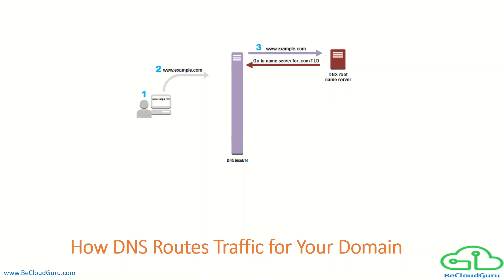The DNS resolver then forwards the request for www.example.com to the DNS root name server, which provides the name server records for the .com domain. The .com name server responds with the name of the name servers associated with example.com — in this case, the Route 53 name servers, since we are using Route 53 for DNS services. The DNS resolver caches these Route 53 name servers, so the next time someone browses to example.com, steps three and four are skipped. Name servers are typically cached for two days.